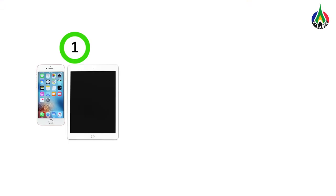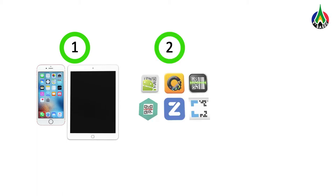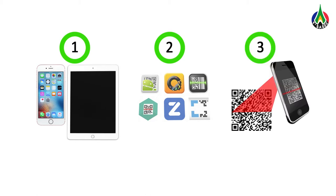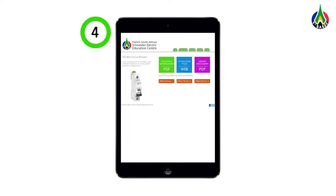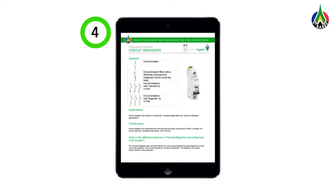All that is needed is an internet connection. Before we start, I want to show you the easy procedure step by step. A device such as a smartphone or an iPad is used. What we do is we install a QR code app onto the device. Next we take the device and go to a QR code and scan it. After you have scanned this QR code, it will take you to a website where you can select multiple things that you need about the practical or the components, such as a lesson explaining it, or maybe component info such as catalogues.